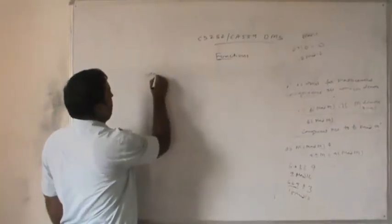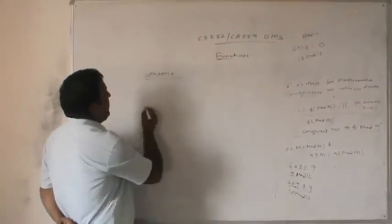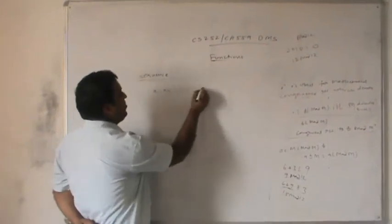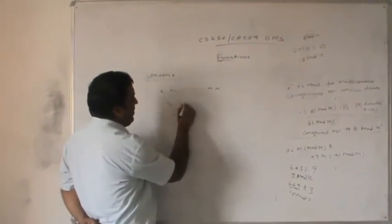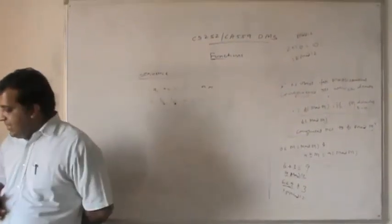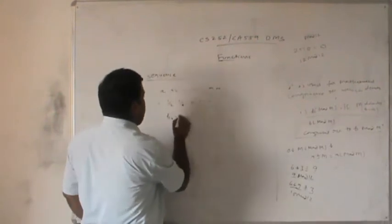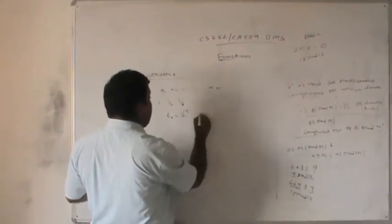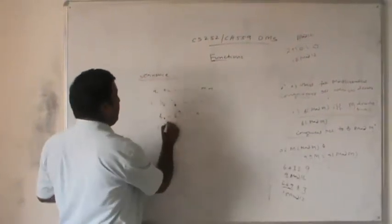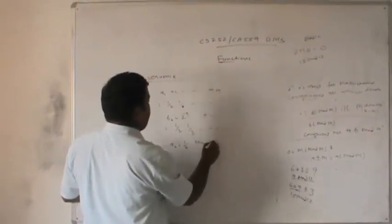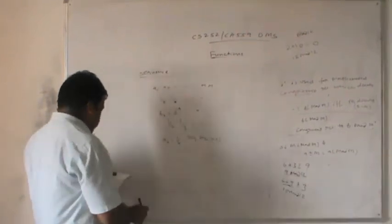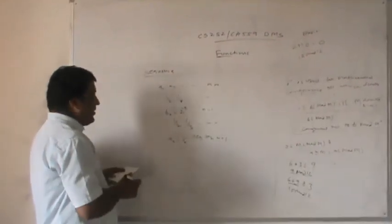The next topic is sequences. In a sequence, we can have terms a₁, a₂, ..., aₙ. For example, the series 1, 1/2, 1/4, ... can be represented as bₙ = 2^(−n), where the sequence begins with n = 1. Similarly, 1, 1/2, 1/3, ... is represented as aₙ = 1/n, where the sequence begins with n = 1.